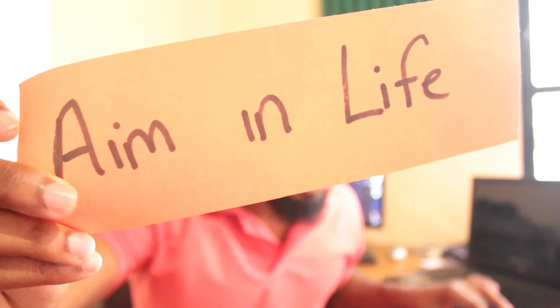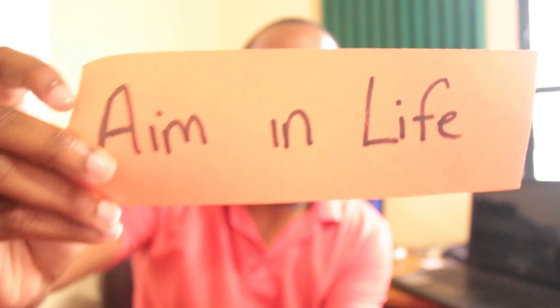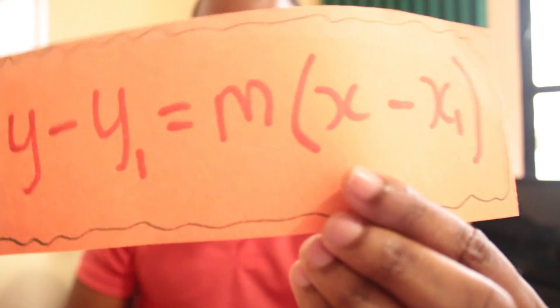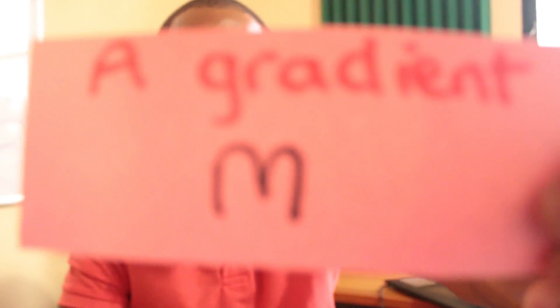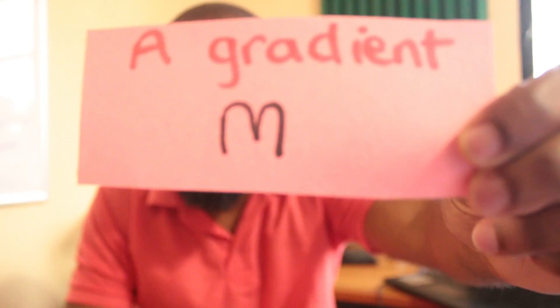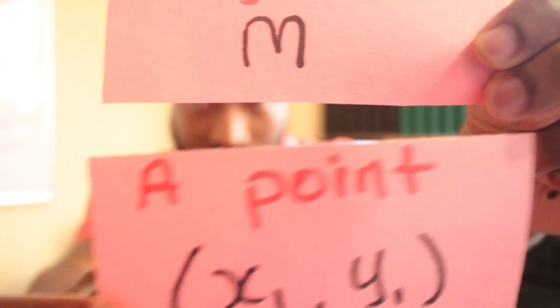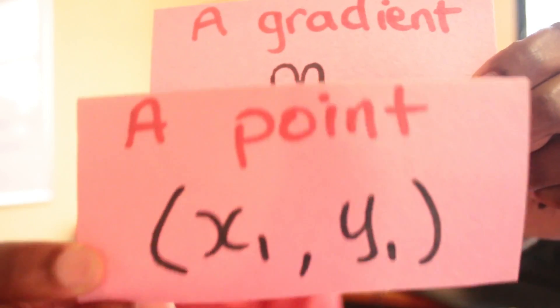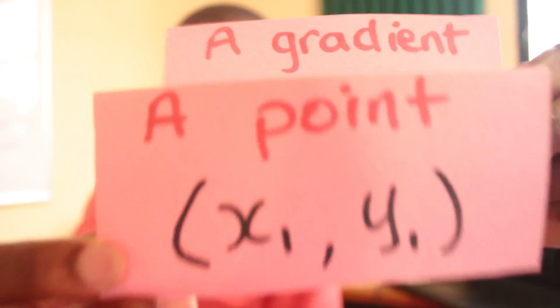The aim in life in coordinate geometry is this equation — the big equation you want to use and adopt in your coordinate geometry flow. After you memorize that equation you need two things to use it: one, you need a gradient, and you need a point. The point is x1, y1 and the gradient is m, and you plug those values into the equation.